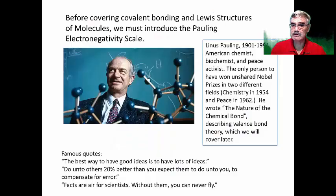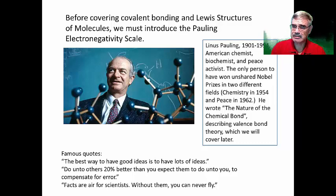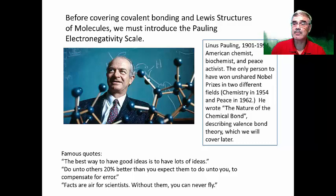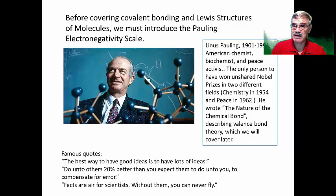But before we go into the rules and how you draw those dot structures, let's talk about the electronegativity scale and Linus Pauling. Linus Pauling was a famous American chemist, biochemist, and peace activist. He is the only person to have won two unshared Nobel Prizes — one in chemistry and one in peace. He wrote a famous book called The Nature of the Chemical Bond, which described valence bond theory. Another one of his contributions was the development of the electronegativity scale.